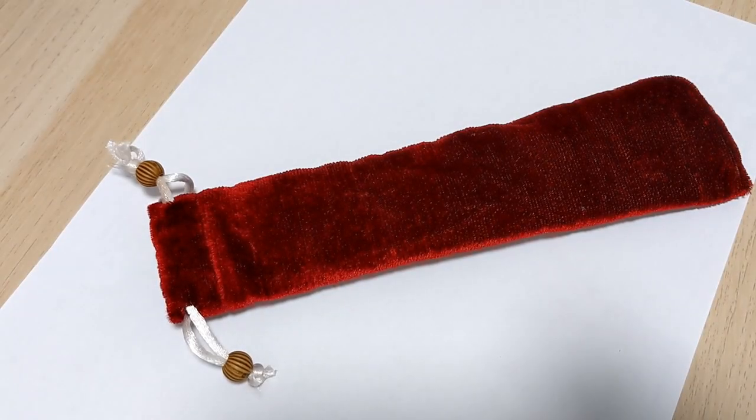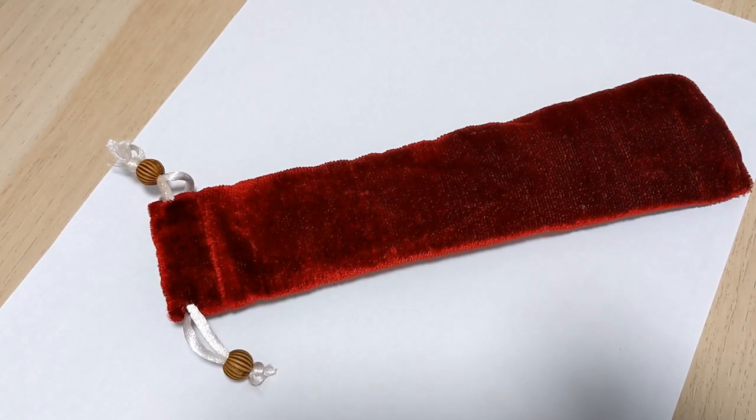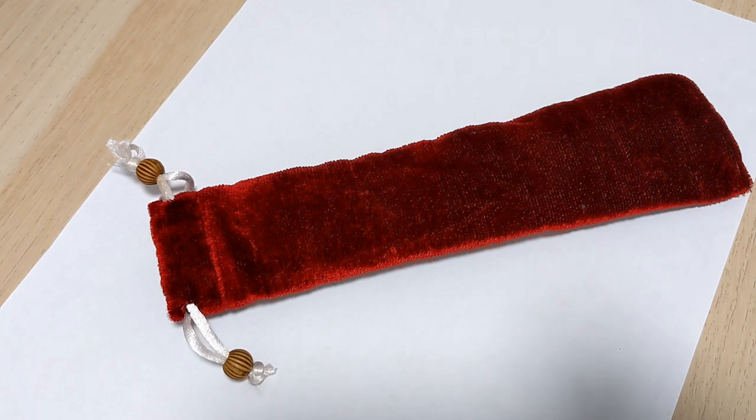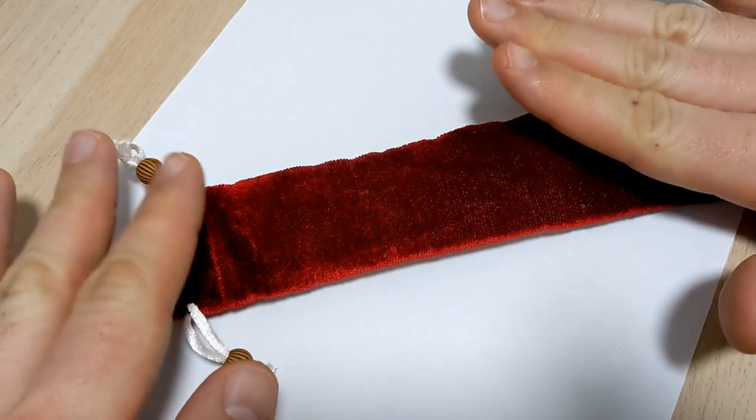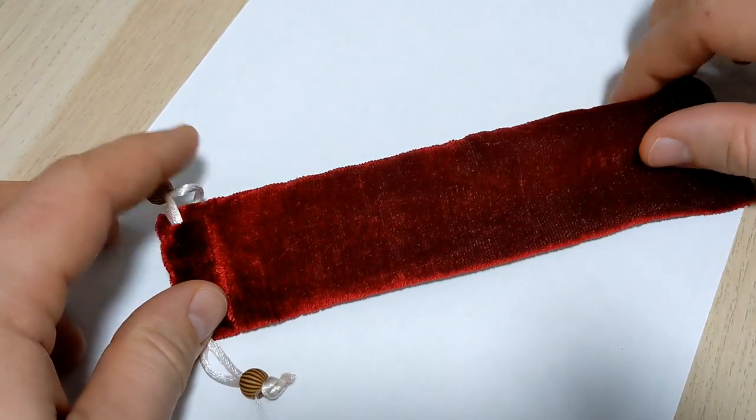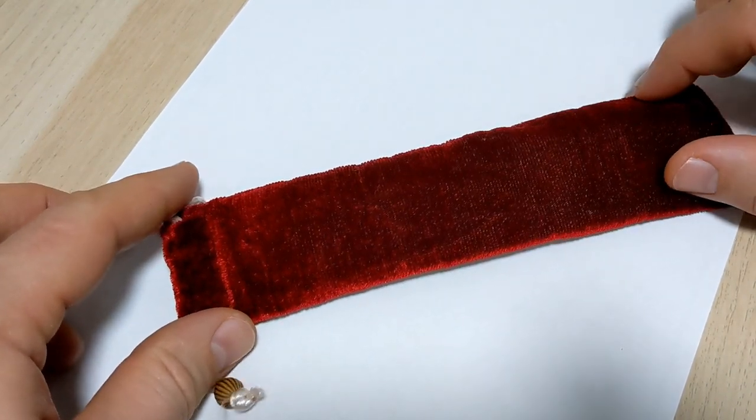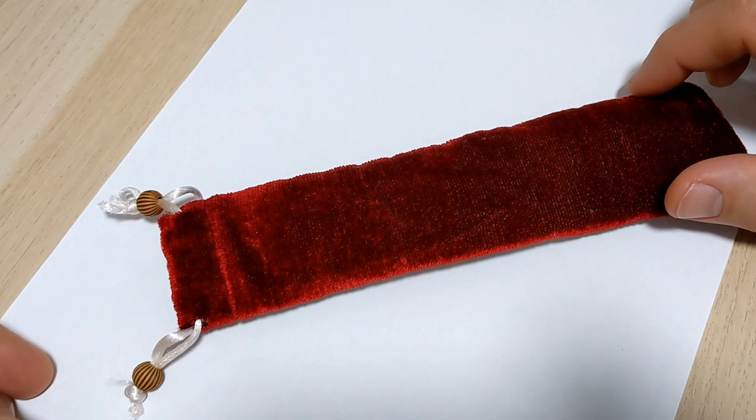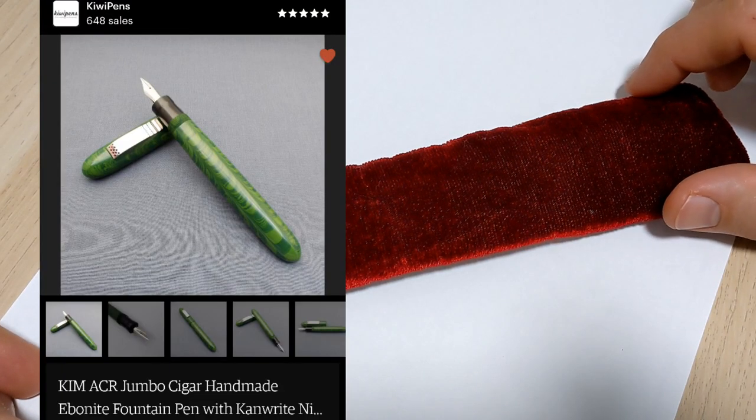Doodle Bud here and I'm going to show you the biggest fountain pen I have ever seen. This is the ACR Jumbo Ebonite fountain pen, handmade in India. ACR are the initials of the pen maker who's been doing this for a number of years. It comes in this cushy velvety type case and it's on Kiwi Pens on Etsy, so check them out.